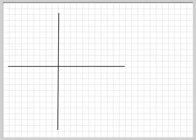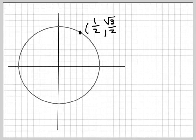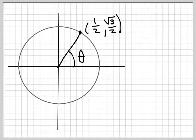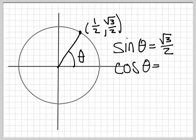Let's go ahead and take another point on the circle — one that we've calculated before. We know that a certain point is given by (1/2, radical 3 over 2). I don't know what angle this makes, but no matter what angle that is, sine of theta has to be the y value, which is radical 3 over 2, and cosine of theta has to be the x value, which is 1/2.